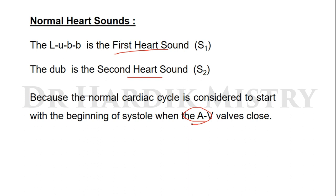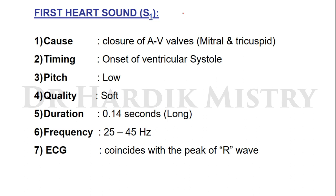The first heart sound S1 or HS1 is caused by closure of the atrioventricular valves. There are two atrioventricular valves: the mitral valve, located between the left atrium and left ventricle, and the tricuspid valve, located between the right atrium and right ventricle.